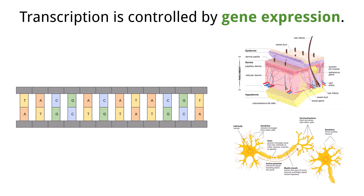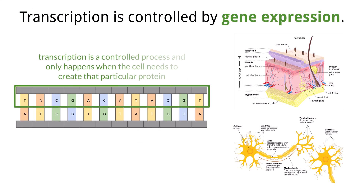Transcription of a gene only occurs when that gene needs to be expressed and subsequently create a protein for the cell. This process is controlled based on each cell, and because the human body has many different cell types, different genes are expressed in each cell to achieve its desired phenotype.